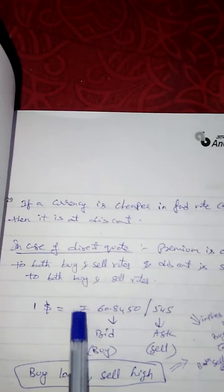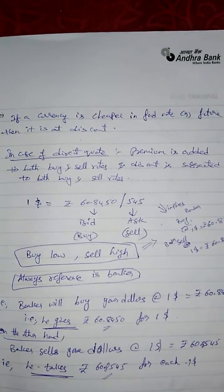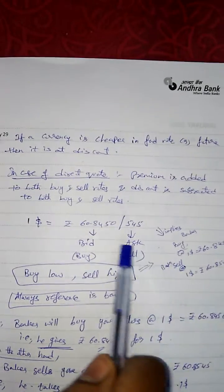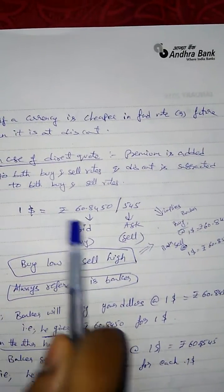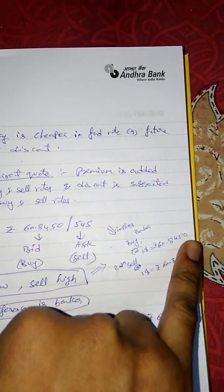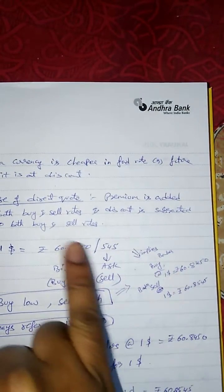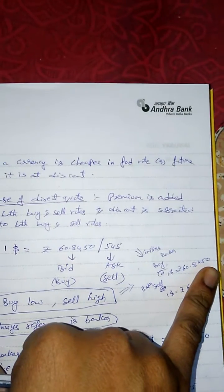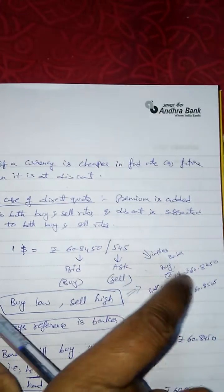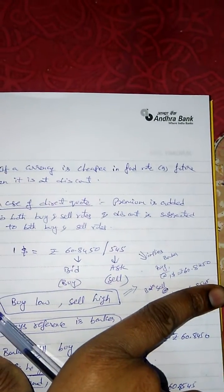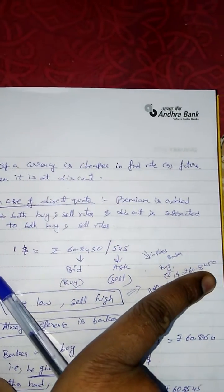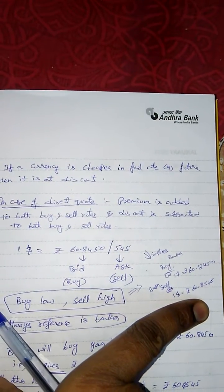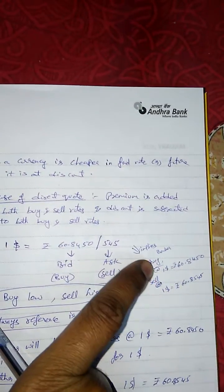The second part is called ask rate or sell rate, that is the rate at which we sell the currency. Always remember, bid and ask — that is buy and sell — is always with respect to the banker. One dollar equals 60.8450 is the bid rate, meaning the banker buys one dollar at rupee 60.8450. Whereas one dollar equals 60.8545 is the sell rate or ask rate, which implies the banker sells one dollar at rupee 60.8545.